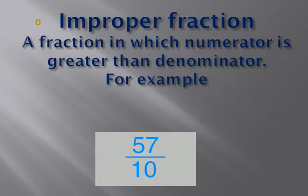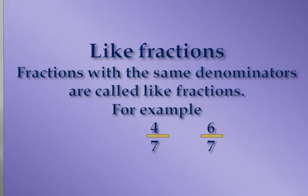Improper fraction. A fraction in which the numerator is greater than the denominator is called an improper fraction. For example, 57 by 10. In this example, you can see 57 is greater than 10.